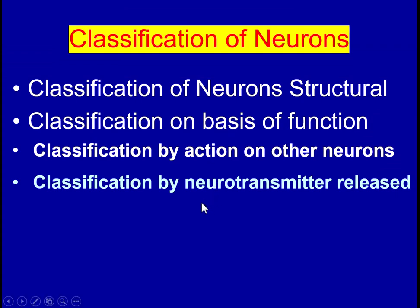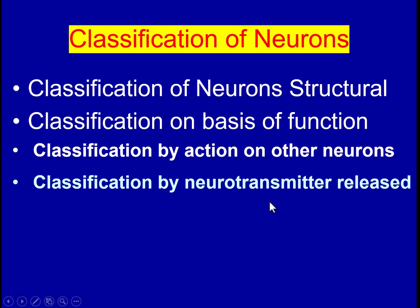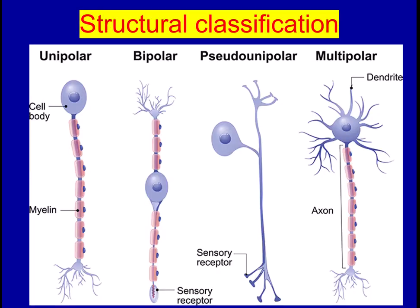Now we will discuss the classification of neurons. Neurons can be classified on a structural basis, on a functional basis, on the basis of their action on other neurons, and also by the neurotransmitter which they release from their terminal ends.